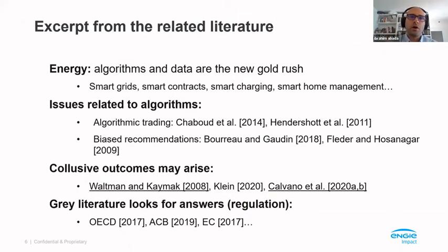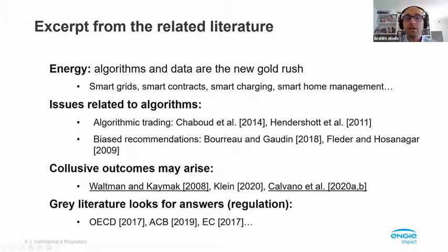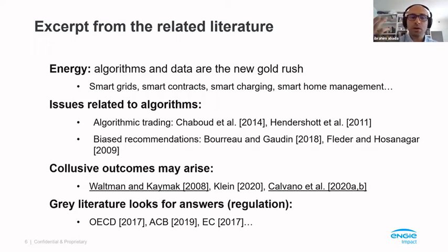This is an overview of the literature linked to our research. First, there is all the literature around digitalization of the energy and electricity sector — smart grids, smart contracts, smart charging, smart electric vehicles, etc. The second stream is more economic: people who have started to understand that despite efficiency, algorithms can harm social welfare — either in trading activities or in platform recommendation systems where there is an incentive to bias recommendations for economic reasons. Most importantly, there is a burgeoning economic literature — with quite a small number of papers today — trying to understand whether algorithms can collude, how you could regulate them, and what the drivers of regulation are.